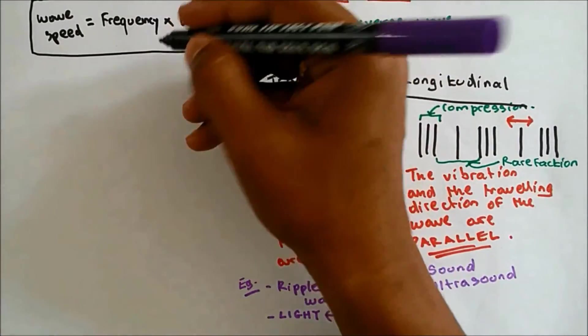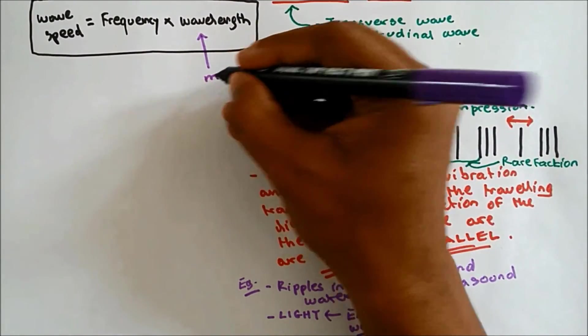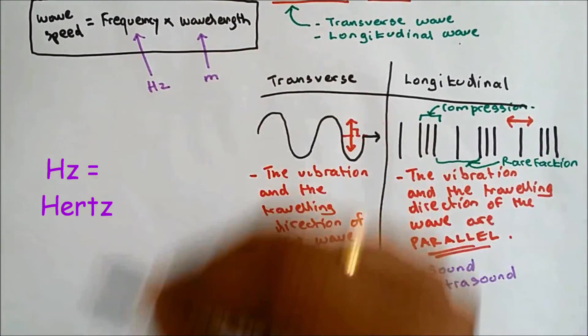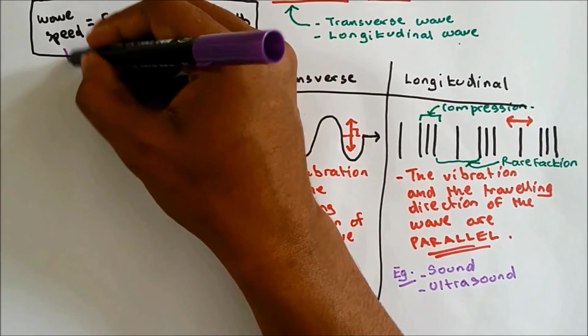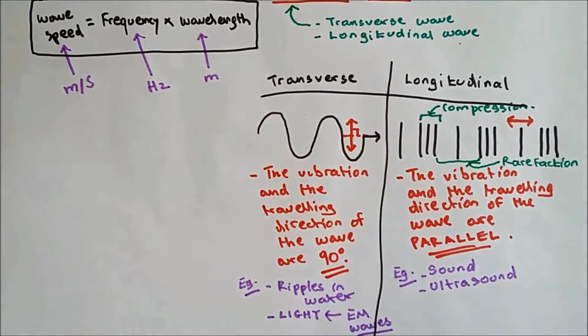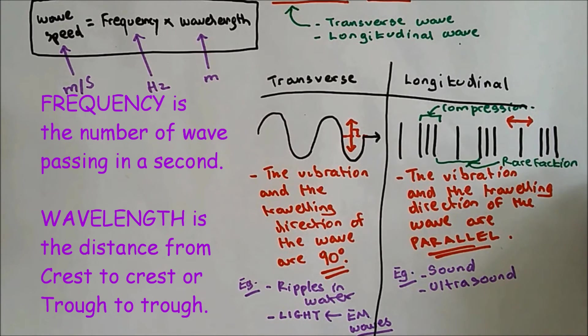You need to memorize the unit. It will not be given in the exam. The unit of wavelength is meter and frequency is hertz. And wave speed is meter per second. So in order to get a greater speed, you need to have a higher frequency and a higher wavelength. Frequency is the number of waves passing in a second. And wavelength is the length from one trough to the next trough or one crest to the next crest.